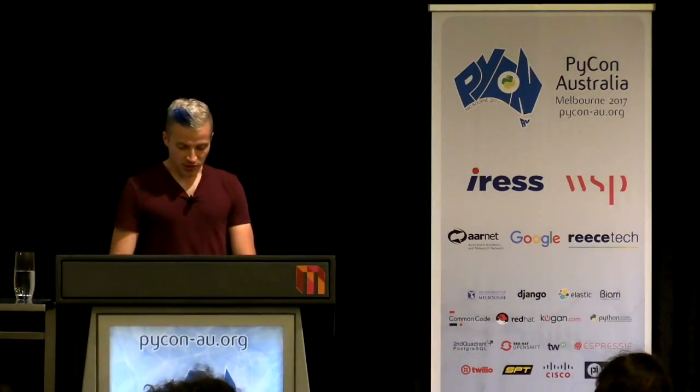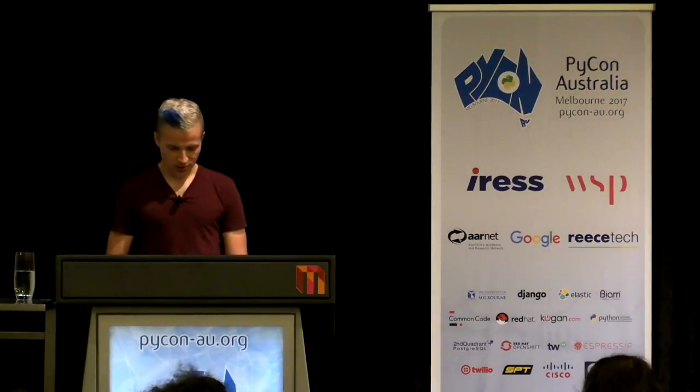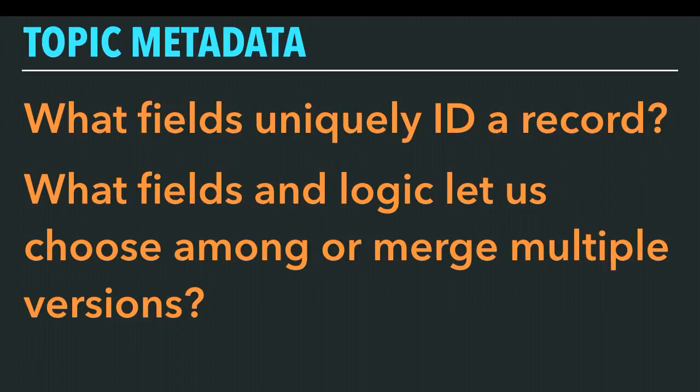Because distributed systems are hard — as Andrew Godwin's talk pointed out yesterday — in the face of network partitions and host failures, we can't guarantee that we're going to produce or consume a record exactly once. And even putting them in order is tricky because clocks are hard. Kafka only knows about the order in which records arrive at the broker. So if you have multiple hosts producing to the same topic, you're going to have to sort the ordering out at consume time. To do that, we need to know which fields in the record constitute a primary or unique key, and what logic we want to use to choose a winner or merge conflicting versions.